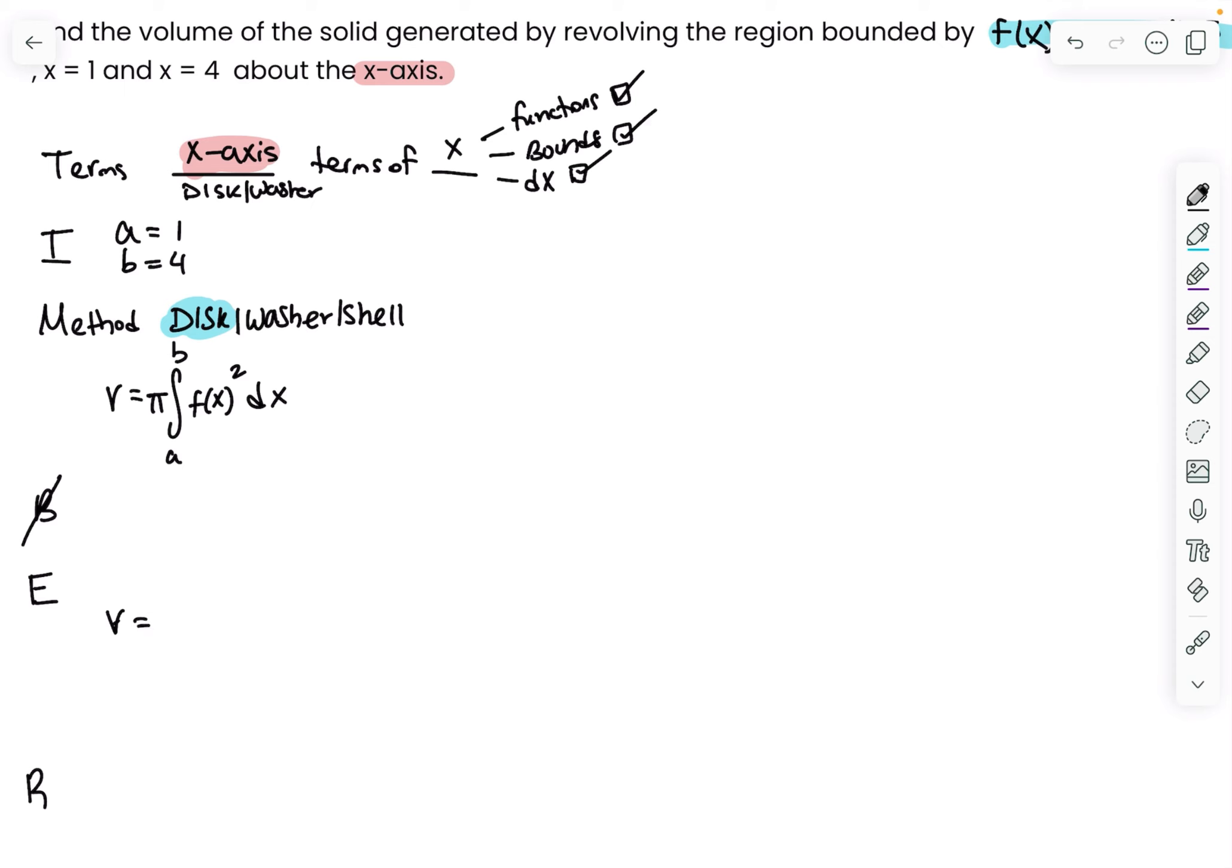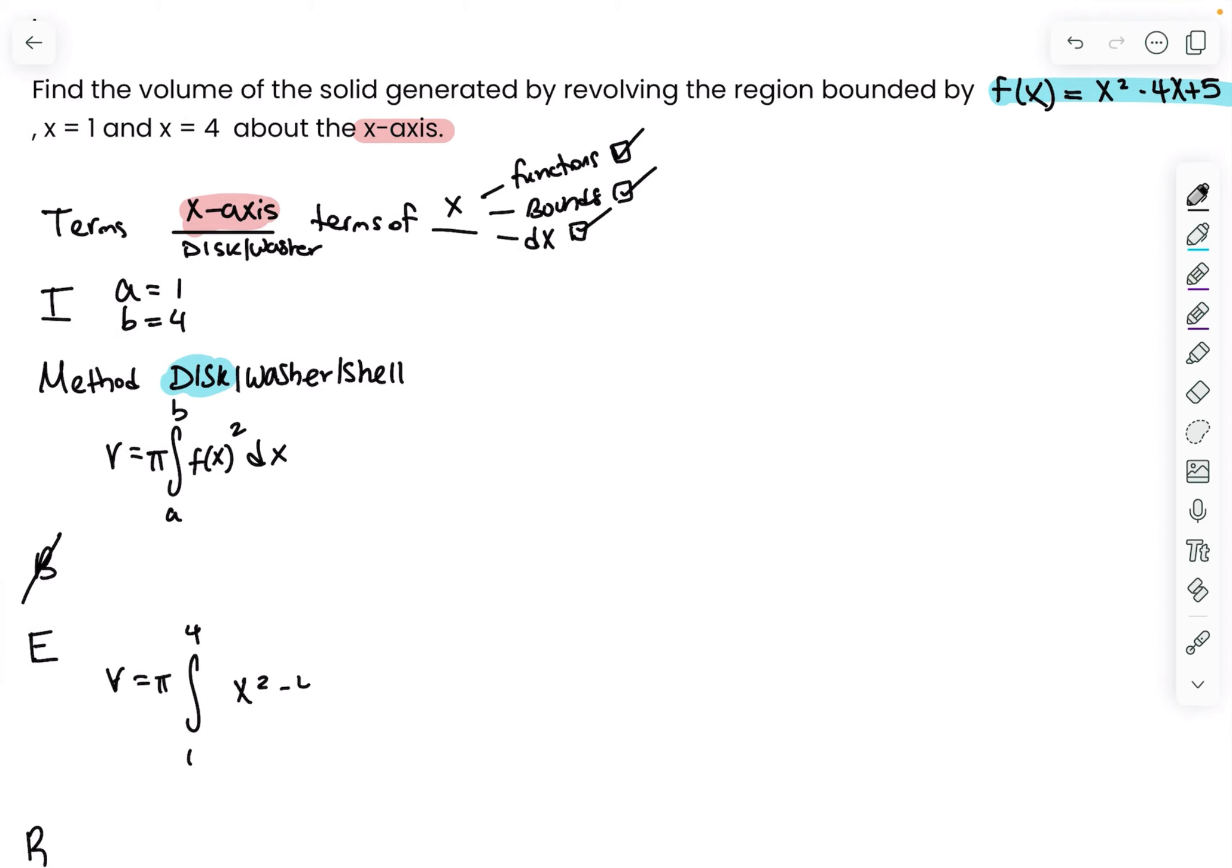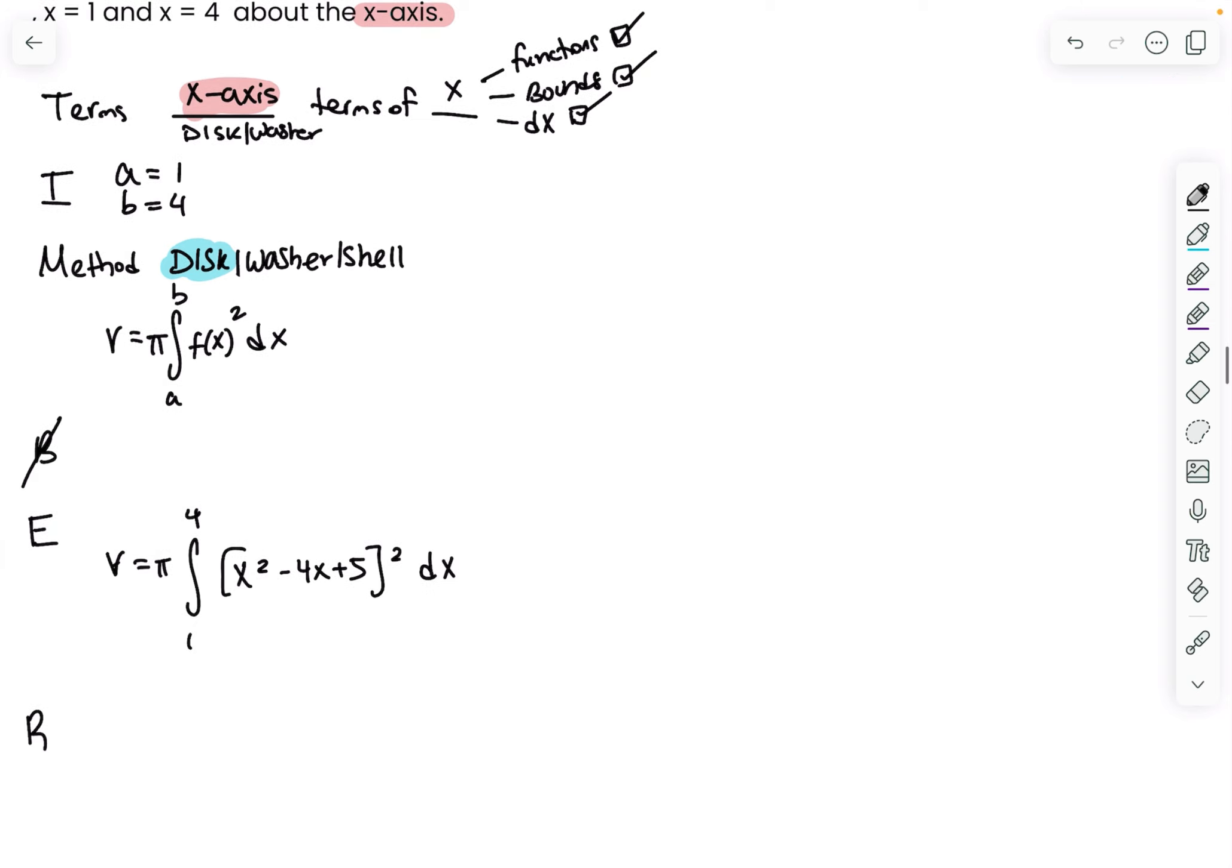E is to evaluate my integral. My integral is π times the integral from 1 to 4 of my function, which is (x² - 4x + 5), and do not forget the square, dx. Then you just evaluate the integral.